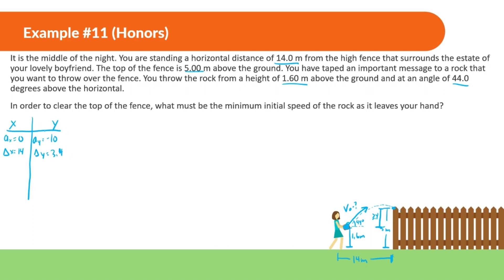The problem you see is that we only have two pieces of information on the x side and the y side, and it's hard to do anything with two pieces of information using kinematic equations. First, we should know that the time it takes to travel 14 meters and to be displaced 3.4 meters is going to be the same. We should also know that the initial velocity in the y direction is going to be v_initial times sine of 44, and the velocity in the x direction is going to be v_initial times cosine of 44.